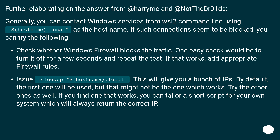Run nslookup $hostname.local — this will give you a list of IPs. By default the first one will be used, but that might not be the one that works. Try the other ones as well. If you find one that works, you can write a short script for your own system that will always return the correct IP.